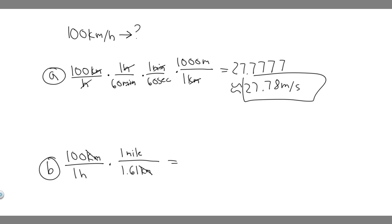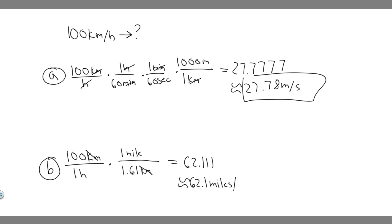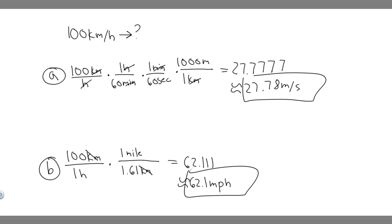So you're just going to do 100 multiplied by 1 divided by 1.61. When you do that, you're going to get 62.111, so I'm just going to round to 62.1. The units are going to be miles per hour — you can write it as MPH, or miles over hour. So 62.1 miles per hour — that's your answer to Part B. Hopefully you found this useful.